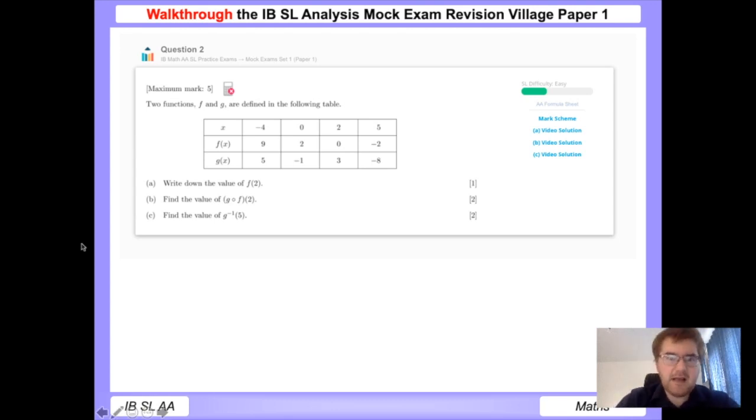First of all, we need to write down the value of f(2). So f(2)—well, when x is equal to 2, f of 2 is equal to 0. That's what this table means. So this stands for f of 2. Likewise, this one here, 3, stands for g of 2, which is exactly how the table functions. So f of 2 will be equal to 0, just reading off the table.